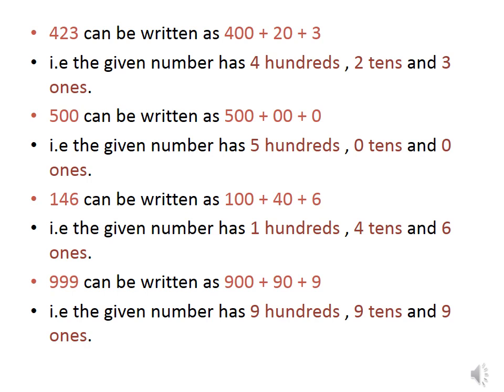It simply has 5 hundreds. 146 can be written as 100 plus 40 plus 6. It has 1 hundred, 4 tens and 6 ones. 999 can be written as 900 plus 90 plus 9 which contains 9 hundreds, 9 tens and 9 ones.